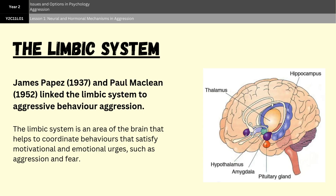The limbic system is an area of the brain that helps to regulate and control emotional behavior, such as aggression. It's made up of various subcortical structures — structures that exist below the cortex, deep within the center of your brain, as you can see on the right of the screen. Two key structures in the limbic system associated with aggression are the amygdala and the hippocampus.